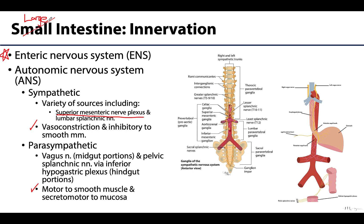Sympathetics also include the lumbar splanchnic nerves, which innervate the more distal portions of the large intestine. The proximal large intestine — up to about two-thirds of the transverse colon — has its parasympathetic supply from the vagus nerve, as it is midgut. The hindgut portions have their parasympathetic supply from the pelvic splanchnic nerves via the inferior hypogastric plexus — these are the sacral parasympathetics from S2 through S4.